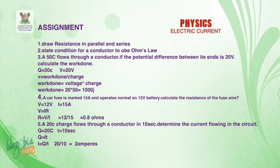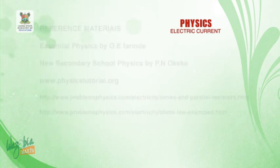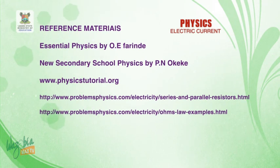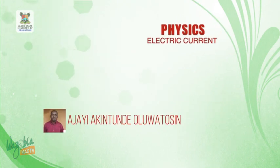The last assignment: a 50-coulomb charge flows through a conductor; if the potential difference between its ends is 20 volts, calculate the work done. Our reference materials are Essential Physics by O.E. Faraday, New Secondary School Physics by P.N. Okeke, as displayed, and the website www.physicstutorial.org. Thank you.